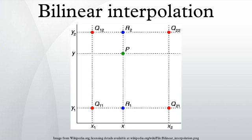If we choose a coordinate system in which the four points where f is known are unit square, then the interpolation formula simplifies to, or equivalently, in matrix operations.